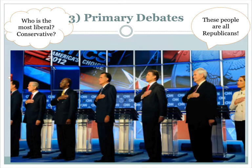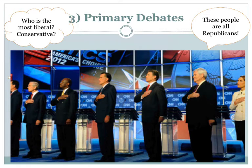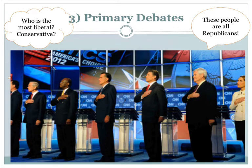As these primary elections are going on, there are going to be primary debates. For example, here is a picture of all the Republicans who ran in the Republican primaries before the 2012 election — all Republicans campaigning and debating against each other in order to be the one Republican on the ticket for the November general election. It's very interesting to watch because you see members of the same party combating each other, saying 'I'm more conservative' or 'I could represent the party best on national defense, taxes, or immigration.' Eventually, one person emerges from these primaries and primary debates to become the one candidate for the Republican Party, and the same thing potentially happens on the Democratic side.